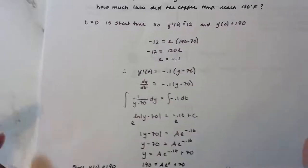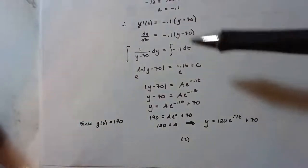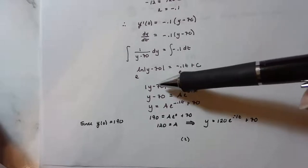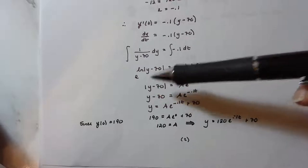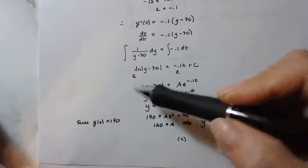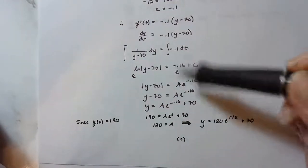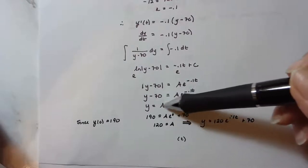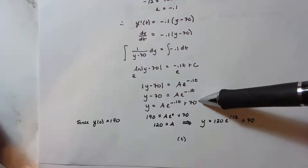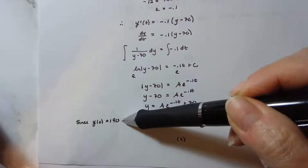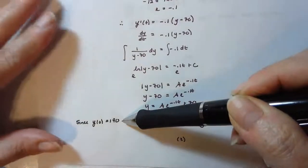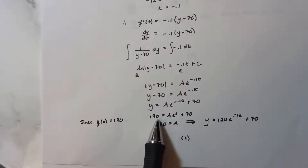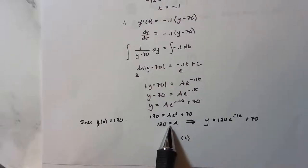After exponentiating both sides to eliminate the natural log, we can remove the absolute value signs because we're assuming y > 70 — we won't have a negative temperature. We then solve for y to get our equation. Using the second initial condition, at t = 0 the coffee was 190 degrees: 190 = A·e^(0) + 70, so A = 120.